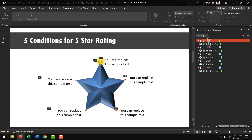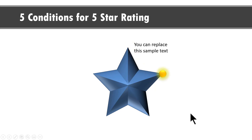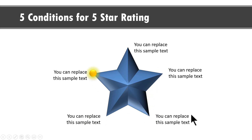Now we have all our animations in place. Let us see how this whole thing plays in slideshow mode. On a click, we bring the viewer's attention to the first point with a zoom and wipe, then motion path and wipe to the second, third, fourth, and fifth points. That is how this beautiful graphic looks — and it's a very simple graphic to create.